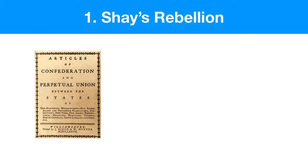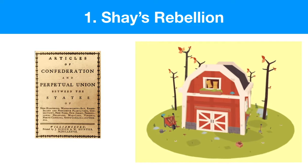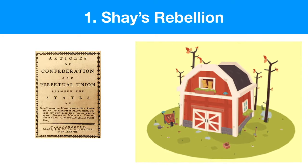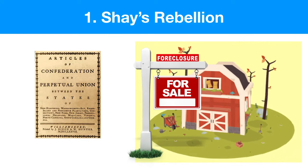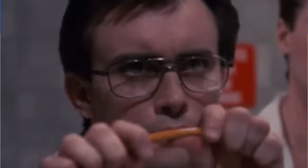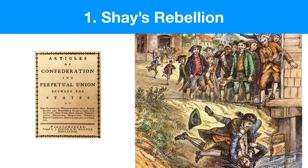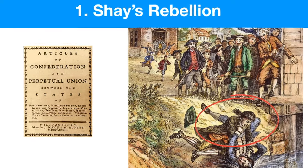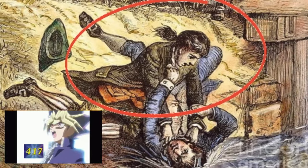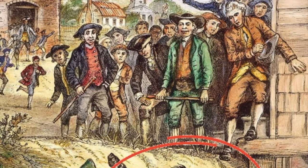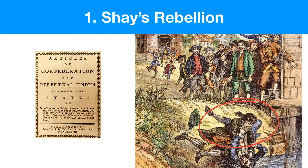So when Daniel Shays returned home, he was completely broke, he was starving, and he saw his farm was up for sale because the bank had not collected any payments from him. He loses it. Meet Daniel Shays — depicted here strangling a banker. And Daniel wasn't alone. A lot of these guys agreed with how he felt. They didn't like what was happening under the Articles of Confederation, and they sure didn't like losing their farms.